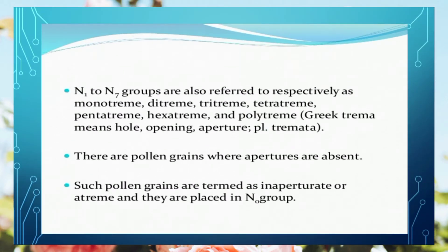We also use scientific terms: N1 refers to monotreme — 'trema' is a Greek word meaning opening. So monotreme means one opening, ditreme for two, tritreme for three, tetratreme for four, pentatreme for five, hexatreme for six, and polytreme for more than seven. Pollen grains where apertures are absent are called atreme or inaperturate, and the symbol N0 is used.